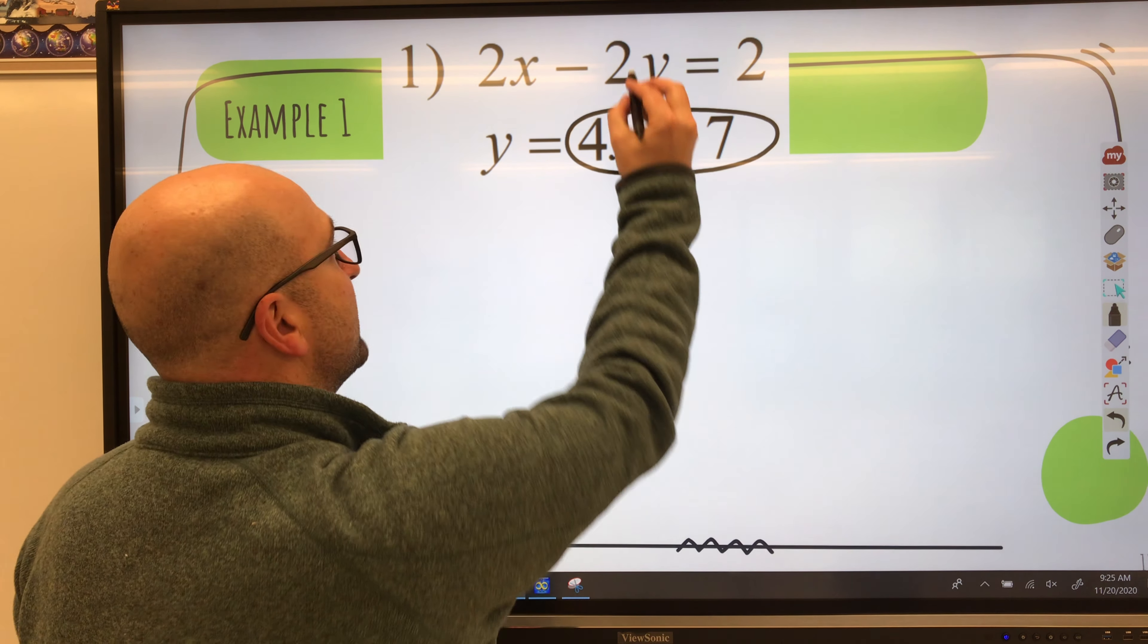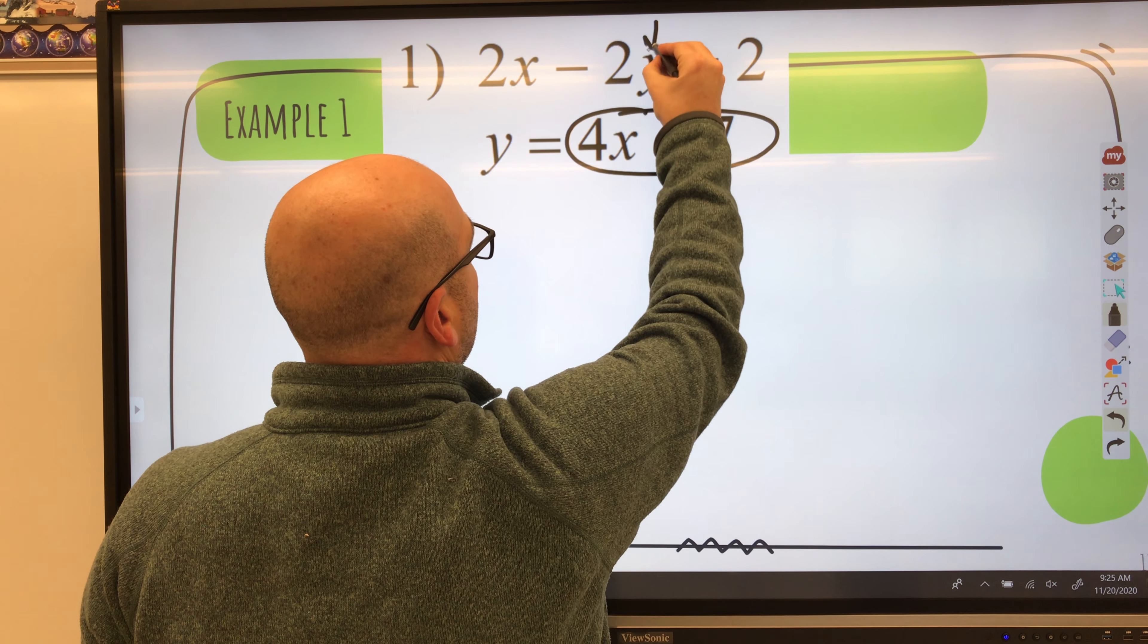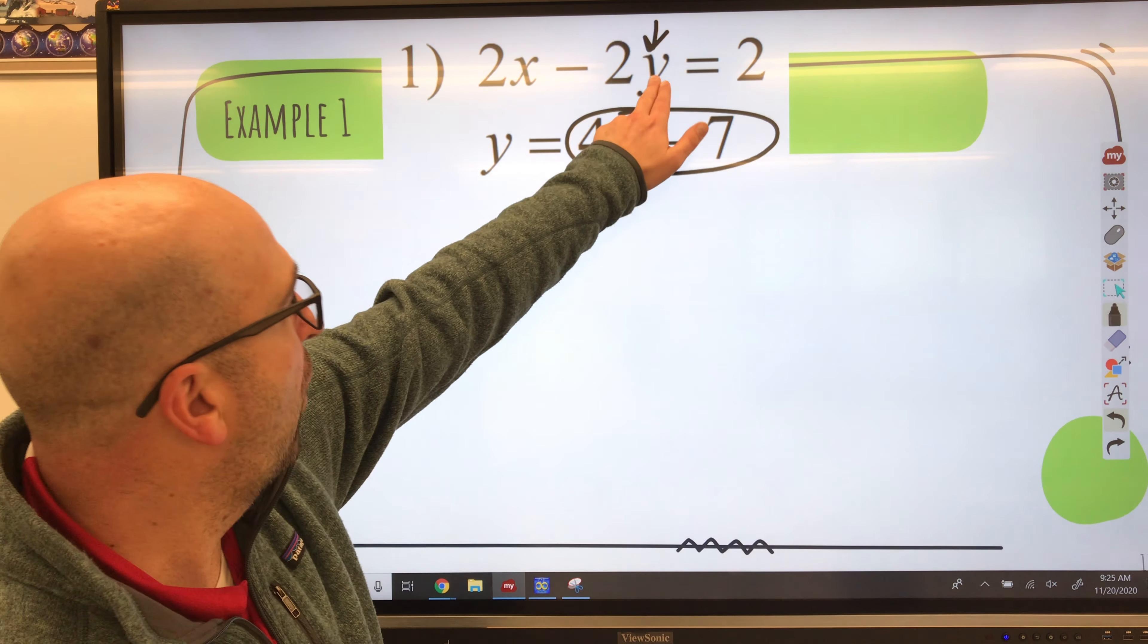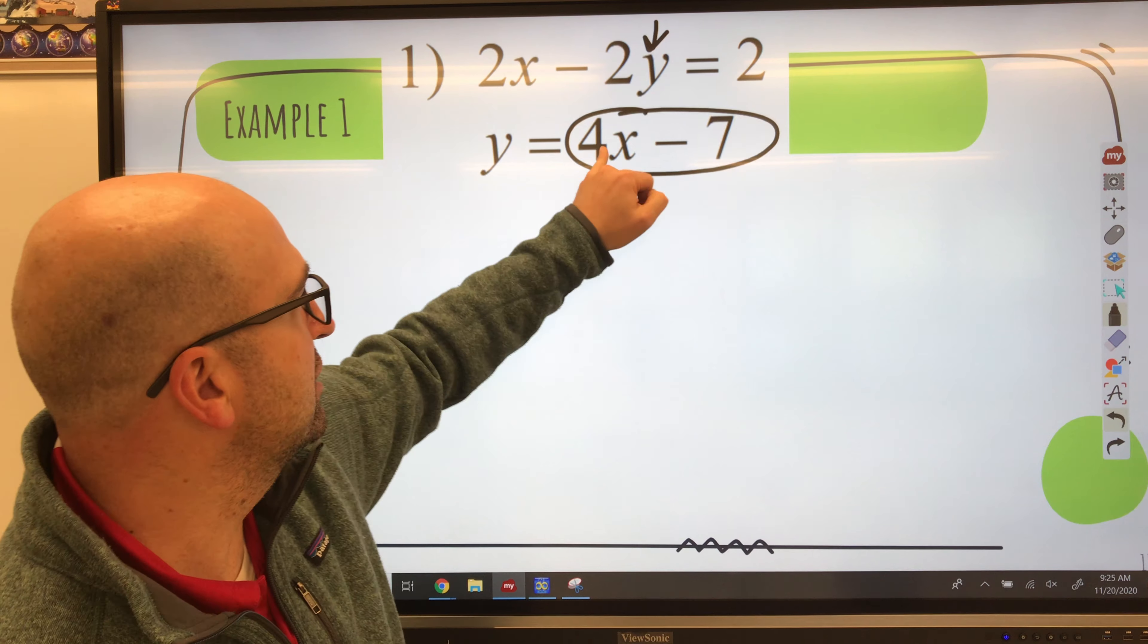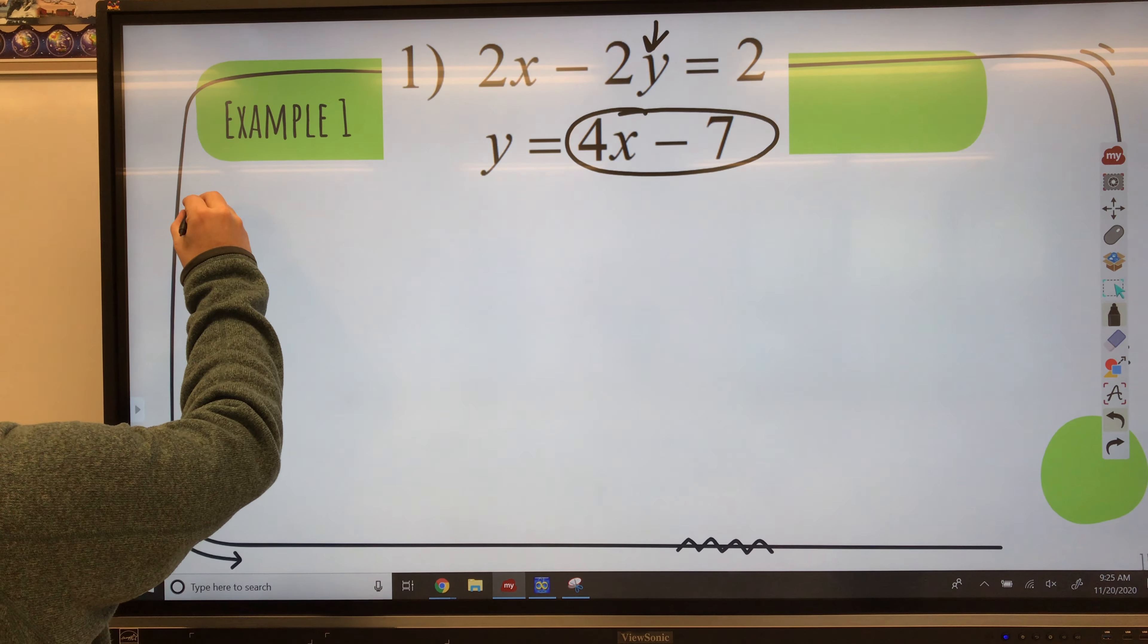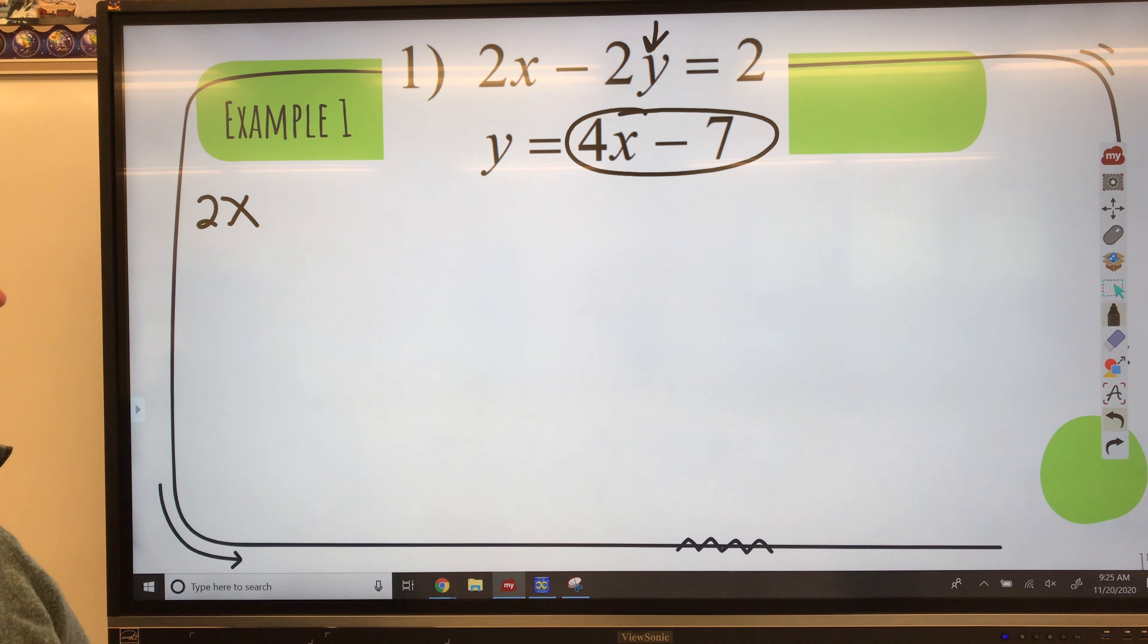And you're going to substitute it in for y in the other equation. So instead of y, you're going to put in parentheses 4x minus 7 in that spot. So let's write it out with that value substituted in.